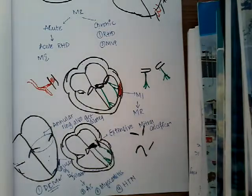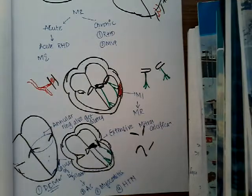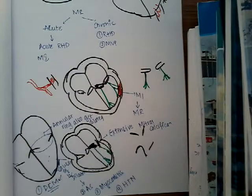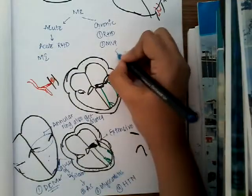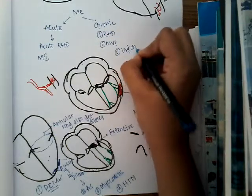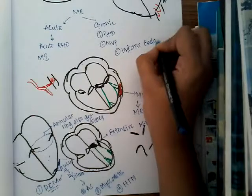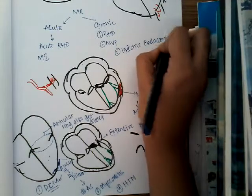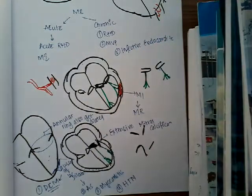These are the different causes leading to mitral regurgitation. Sometimes the valve itself is destroyed — this can occur due to infective endocarditis, where the valve becomes necrosed or destroyed, thus resulting in mitral regurgitation.